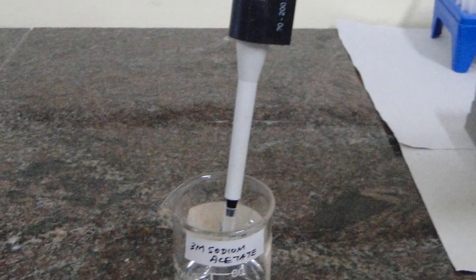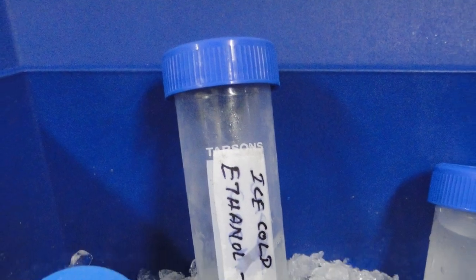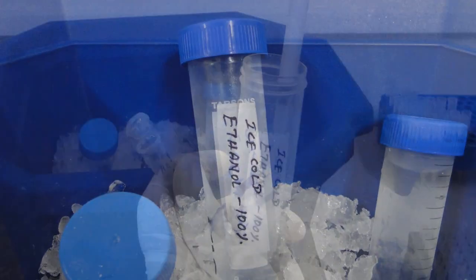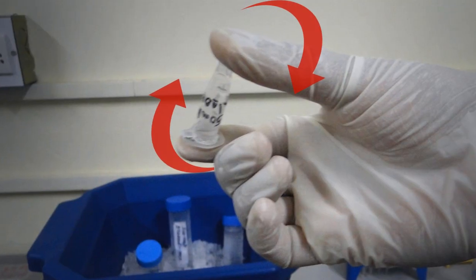Add 3 molar 100 microliters of sodium acetate to the vial. To the same vial, add 100 microliters of ice-cold 100% ethanol kept in an icebox. Mix it by inverting the vial slowly.